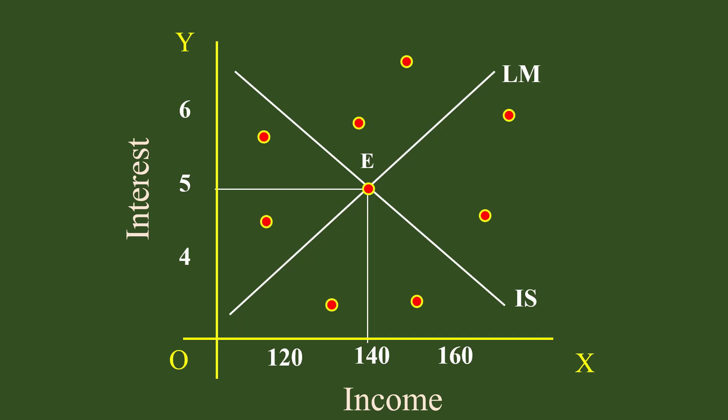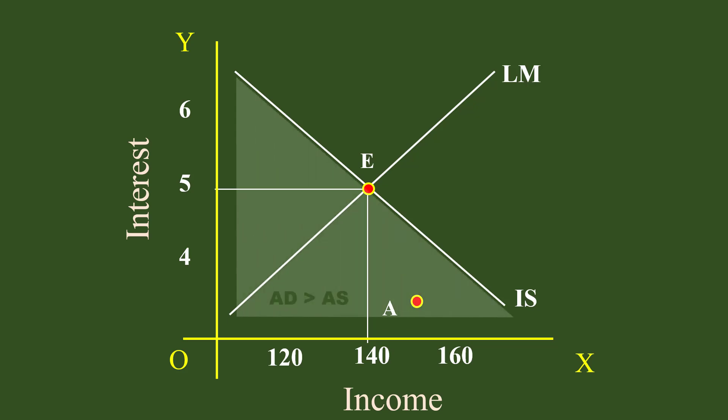All other combinations that do not lie on these two curves represent interest-income combinations where neither market is in equilibrium. Now let us discuss how an economy moves from disequilibrium to equilibrium. Take point A — it is neither on the IS curve nor on the LM curve. Point A lies to the left of the IS curve, where aggregate demand is greater than aggregate supply, so the market tries to move horizontally to reach a point on the IS curve. The white color arrow shows this.